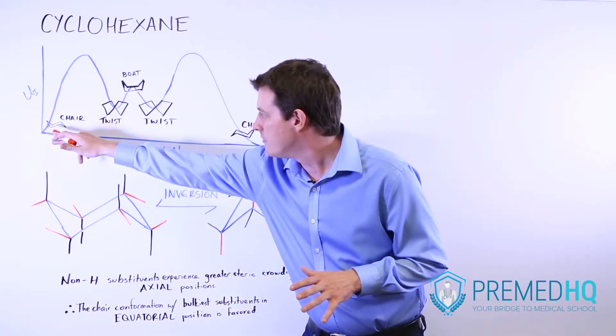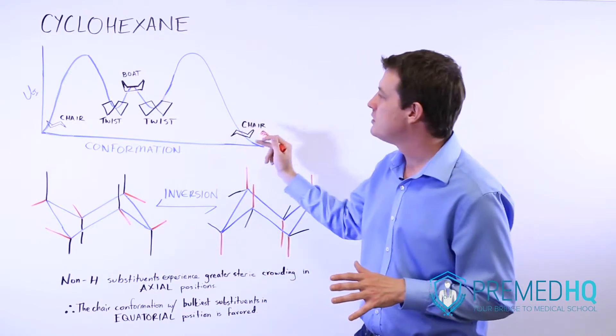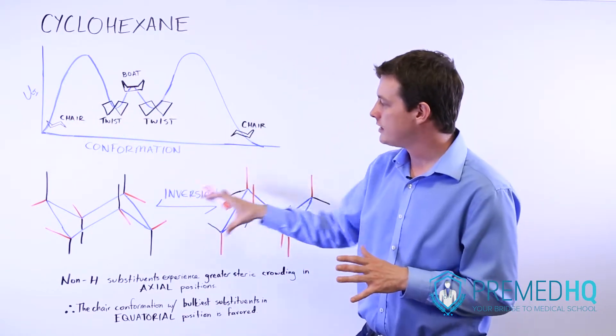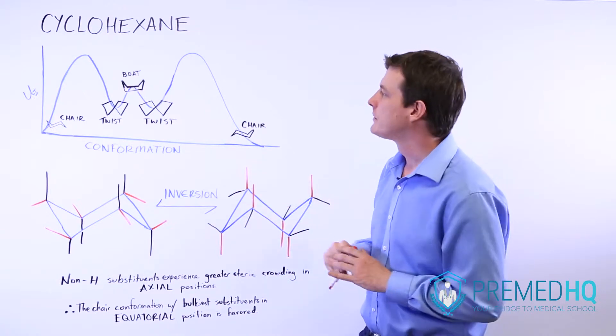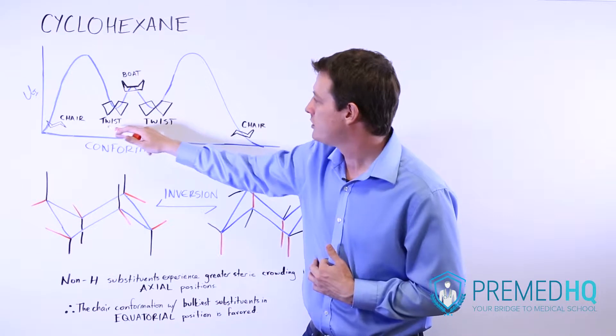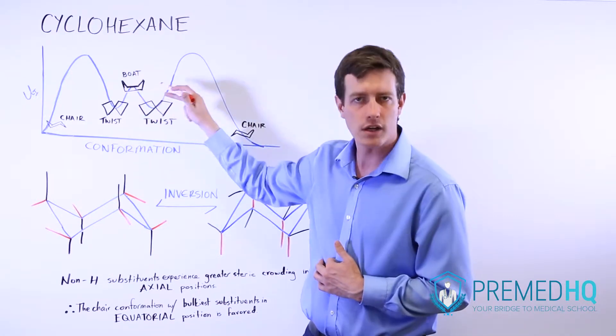Notice also that it can alternate between two different chair conformations. And we'll go through what that does to the substituents in a moment. And in order to do that, it often has to pass through a twist conformation and a boat conformation.